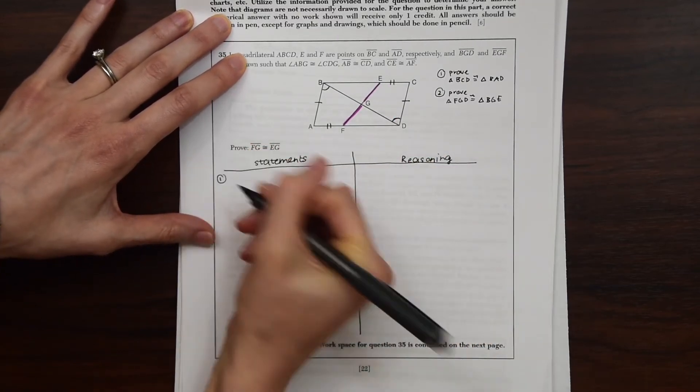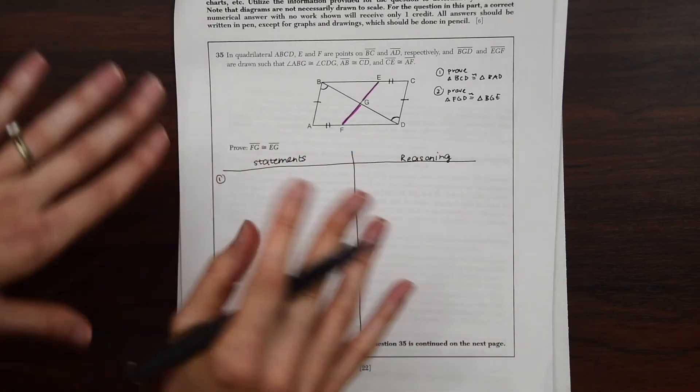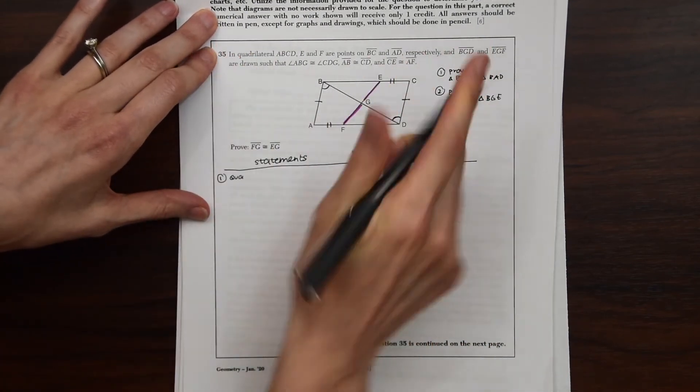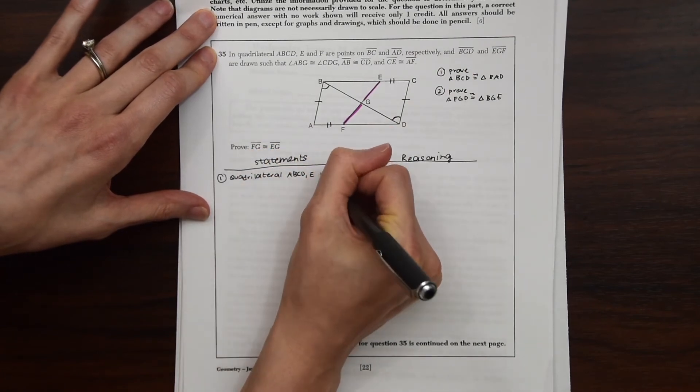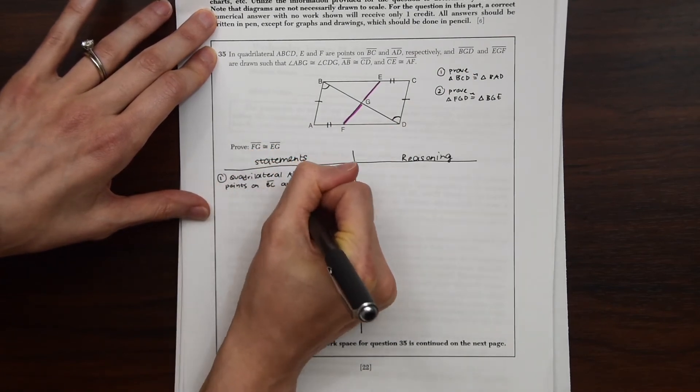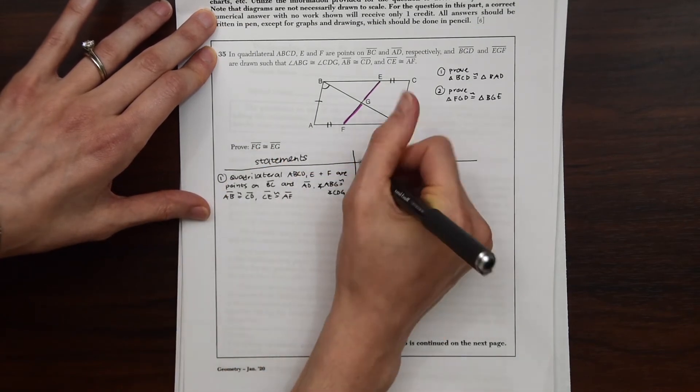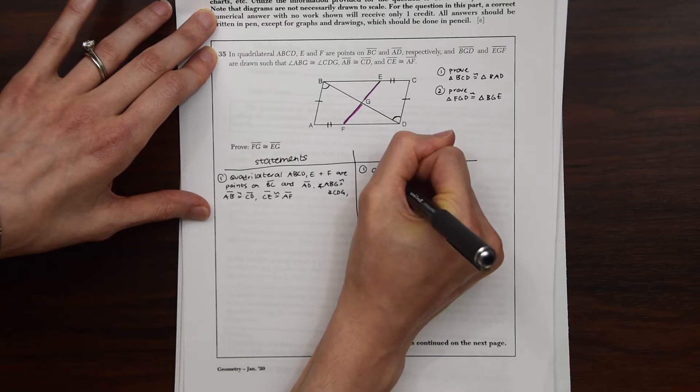So first, of course, let's write out all the given stuff they tell us. So we have everything they say right here. And the reasoning for that is just that it's given.